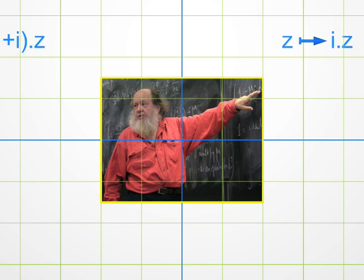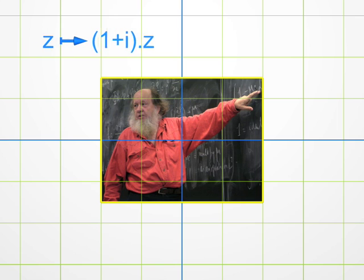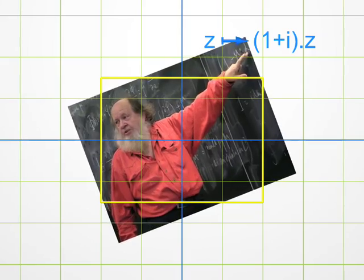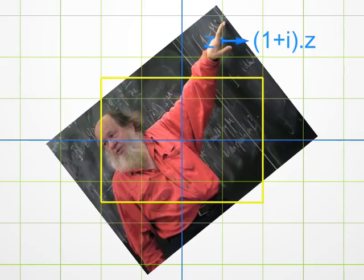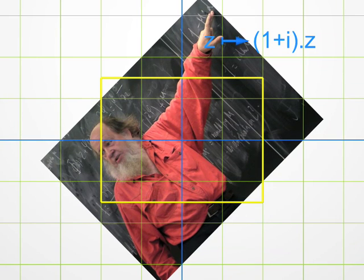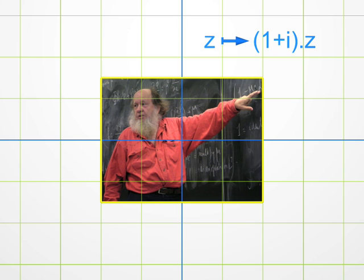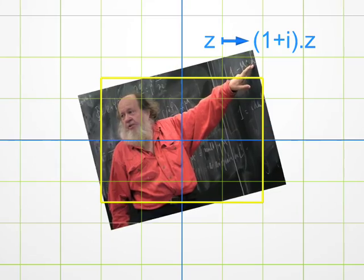A bit more complicated: multiplication by 1 plus i. Look at the complex number 1 plus i. It corresponds to the point with abscissa 1 and ordinate 1. Its argument is 45 degrees, and its modulus is the square root of 2, using Pythagoras' theorem. Hence, a multiplication by 1 plus i amounts first to multiplying the modulus by the square root of 2, and then to adding 45 degrees to the argument. In simple words, one has to combine a homothety and a rotation. This is called a similarity.